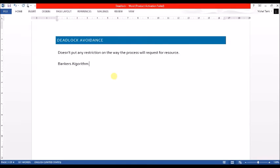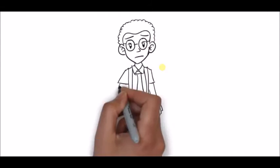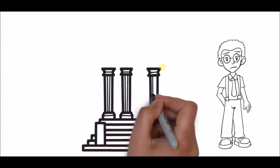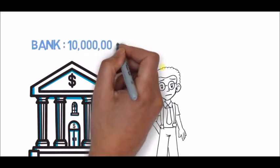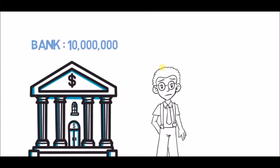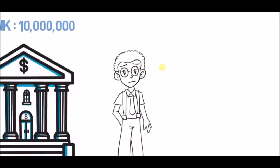Let's see how the Banker's Algorithm works through a bank analogy. I'm Vishal, working in a bank that has a total of 1 crore rupees to provide as loans to customers. My job is to decide whether to grant a loan or not.